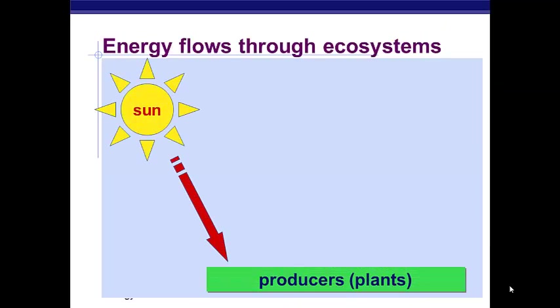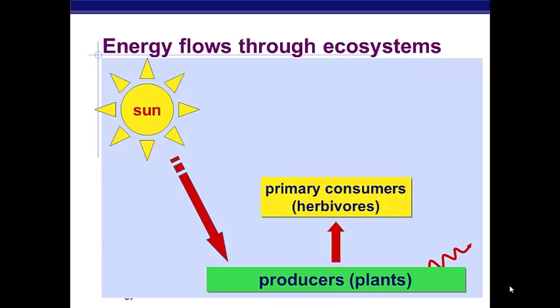When energy enters an ecosystem, it enters at the level of the producers, which are organisms that can produce their own food. This includes plants, protists, bacteria — anything that can photosynthesize and make its own food. Next, we have the primary consumers, or herbivores, that eat the plants.